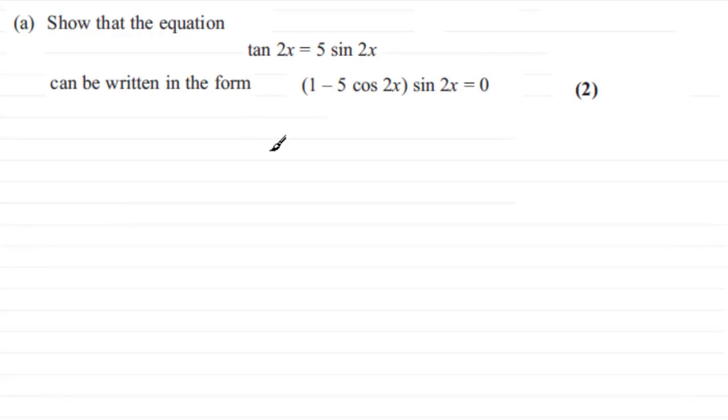Well first of all I'm just going to copy down the equation that we're given, so that's tan 2x equals 5 sin 2x. Now what I've got to prove doesn't contain tan 2x, so that's a clue. I've got a sin 2x here and I've got it in here, so I don't really want to do anything with this. So tan 2x and I've got a cos 2x as well - that gives me a clue.